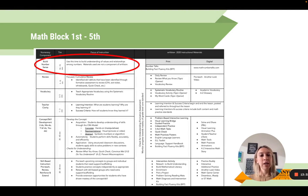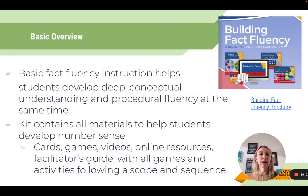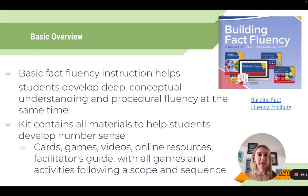For whole group explicit instruction on number sense, we recommend the Number Talks book or the Building Fact Fluency kits. The Building Fact Fluency kits have number talks built into each lesson string and support students through the concrete-representational-abstract continuum. Building fact fluency instruction helps students develop deep conceptual understanding and procedural fluency at the same time — what do the numbers mean, how do they work, and how do they work together.